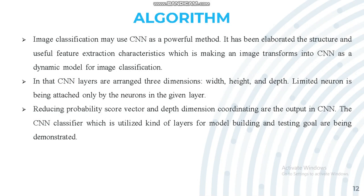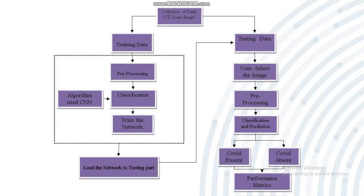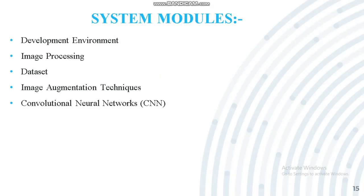This is the system architecture of our proposed model. We collect the dataset, then perform training, which includes pre-processing and classification using the CNN algorithm. We train the neural network, then load the network to the testing part. In testing, we select an image, pre-process it, and perform classification and prediction, which gives the result as COVID present or COVID absent. From the performance matrix we obtain the total accuracy of our CNN model.